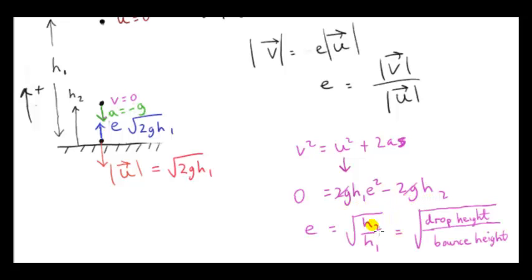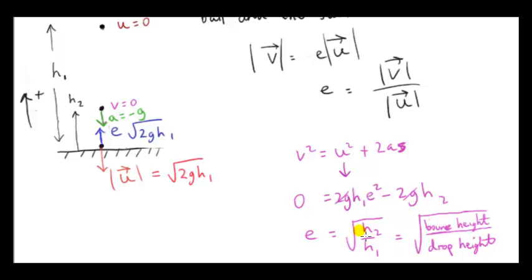We see that e is the square root of the bounce height h2 divided by the drop height h1. The actual values of the heights don't matter — it's the ratio h2 over h1 that counts.